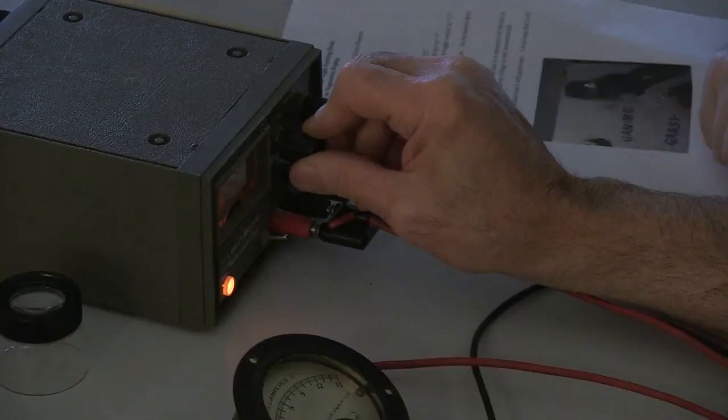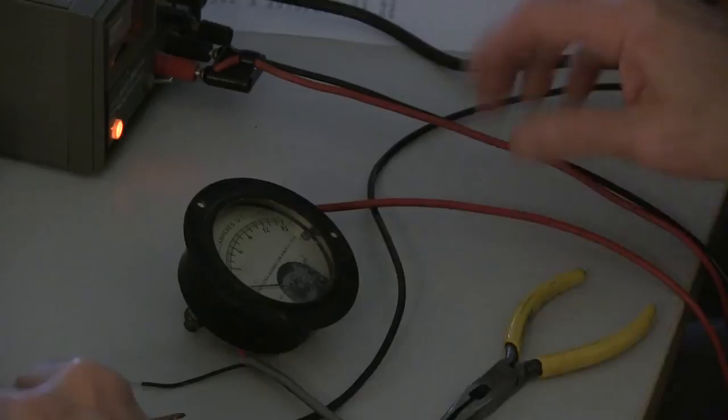So the ammeter is reading zilch. Oh, just a minute. I had a wire not connected. That would explain it. I'm sorry. We had a wire not connected. Okay. Hold on a minute. Sorry about that. Alright. Let's try this again.